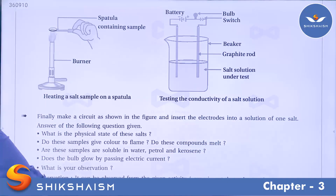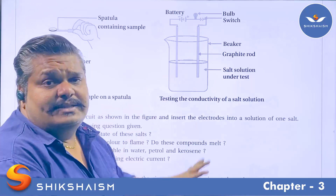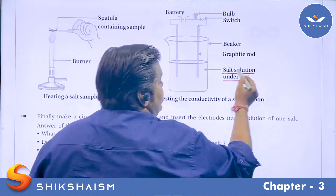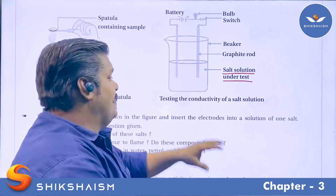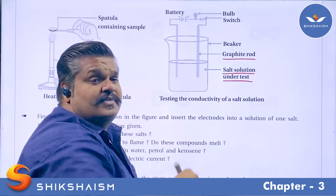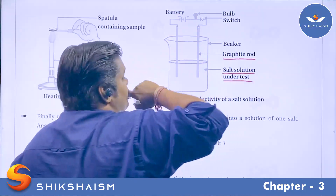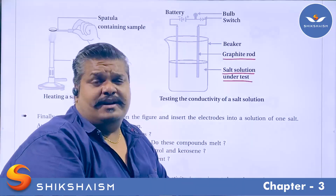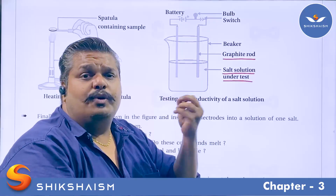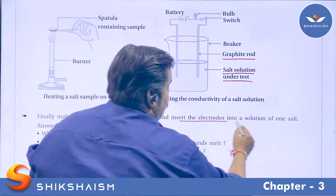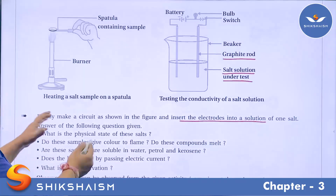Next, make the electrolytic cell. This diagram represents an electrolytic cell. It has a beaker or apparatus which contains a solution — for example, NaCl solution. Barium chloride or potassium iodide solution can also be used. Use two graphite electrodes and dip them in the solution. Connect the circuit using a battery and a bulb. Pass electric current and check whether the bulb is glowing or not. Finally, make the circuit as shown in the figure and insert the electrodes into the solution of one salt.